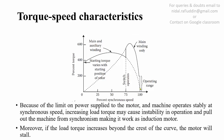At the stable operating point, the load torque can range from zero to about two times the rated value. But as soon as the load increases beyond this, the motor will pull out of synchronism and will operate at a speed less than the synchronous speed, where it will work as an induction motor. Moreover, if the load torque increases beyond the crest of this curve, the motor will stop or stall.